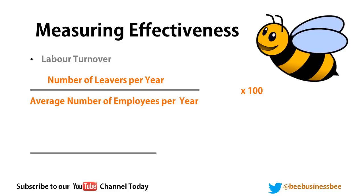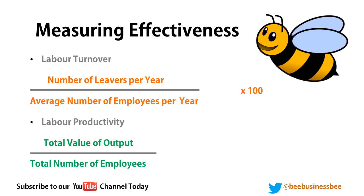A high labour turnover means you're recruiting more staff, incurring more cost and more training, and it probably indicates staff aren't motivated. Normally a low labour turnover is good. Labour productivity — total value of output divided by number of employees — tells you how many units each employee produces. The higher the units, the more efficient and productive the business.